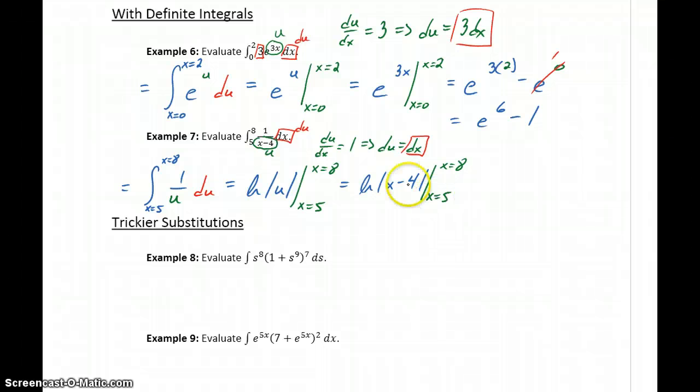So now that these variables agree with each other again, we can make those substitutions and get to our final answer. So this will become the natural log of the absolute value of 8 minus 4, minus the natural log of the absolute value of 5 minus 4.